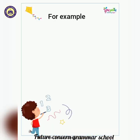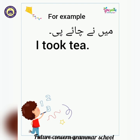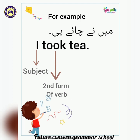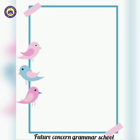Let's understand it with an example: 'Main ne chai pi' — 'I took tea.' In this example, 'I' is the subject, 'took' is the second form of the verb, and 'tea' is the object. That's how the positive sentence of past indefinite tense is translated.